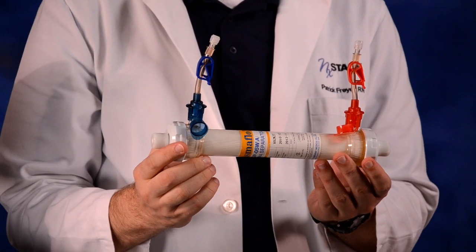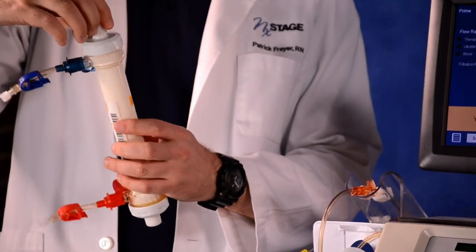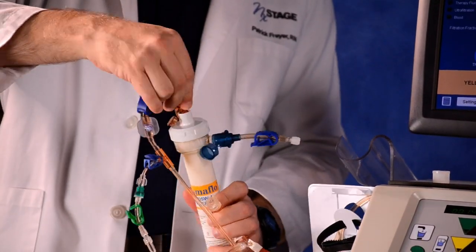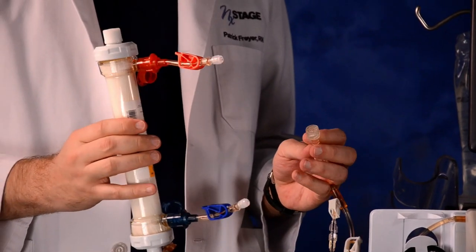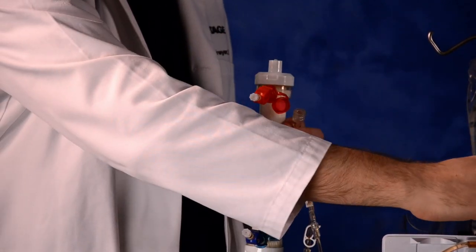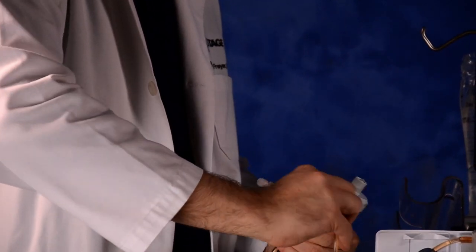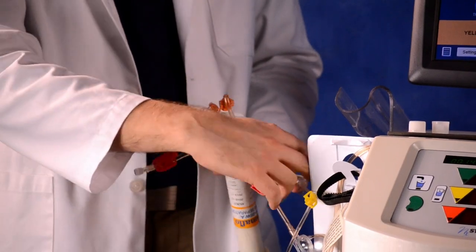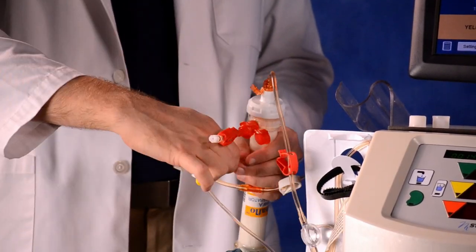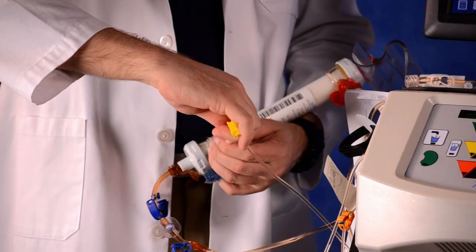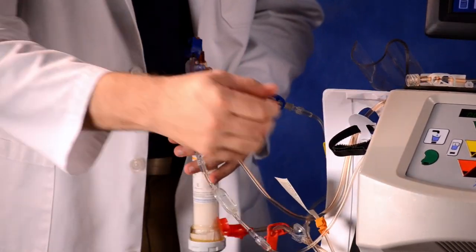Now turn the filter so that you can read the language. Remove the cap from the venous outlet top port. Attach the venous bloodline and unclamp. Finally, connect the effluent line to the blue Hansen connector and unclamp the blue Hansen connector. Press the red Hansen connector and yellow clamps. Discard the filter tee and press add fluid to continue.